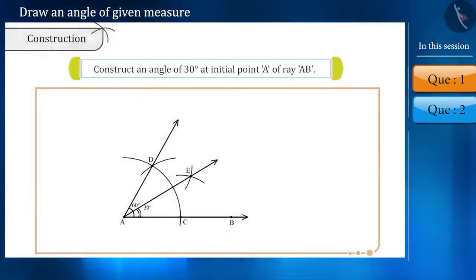After completing the last process, the 30 degree angle at point A can be bisected again to arrive at an angle of 15 degrees.